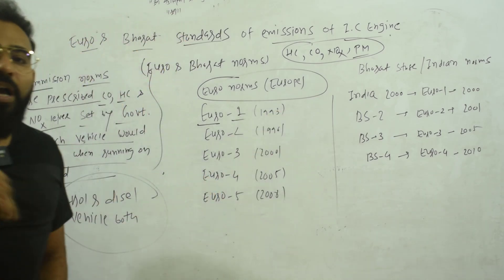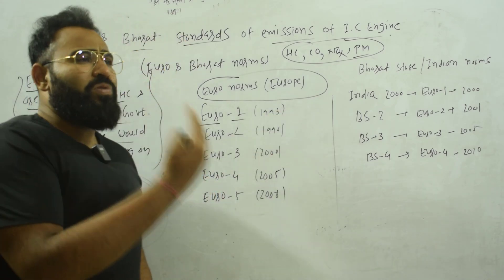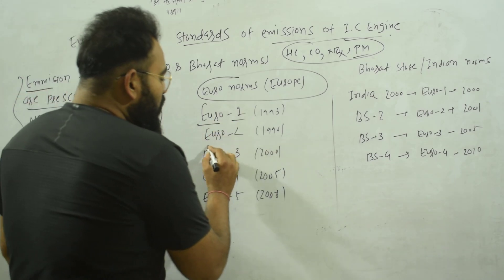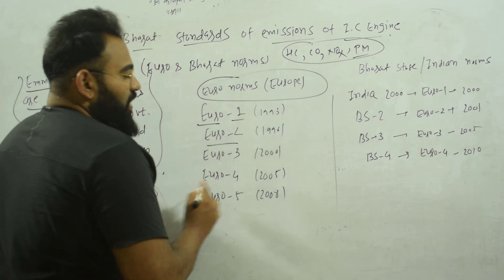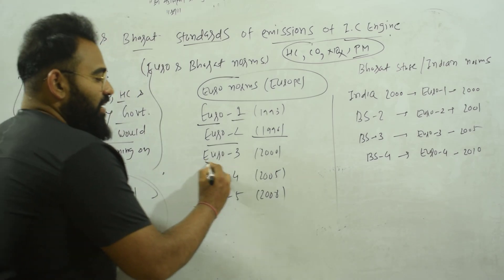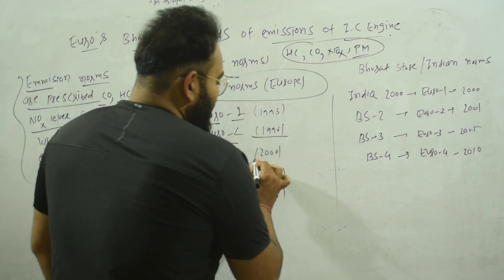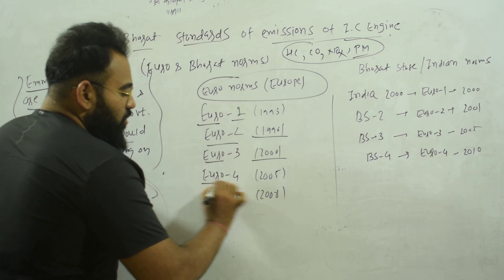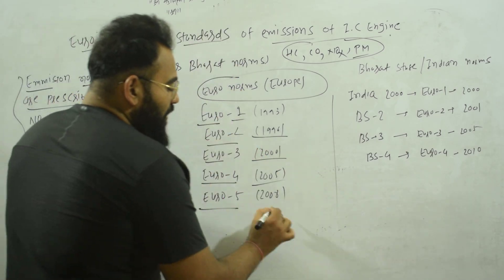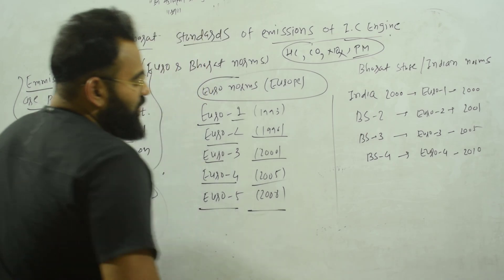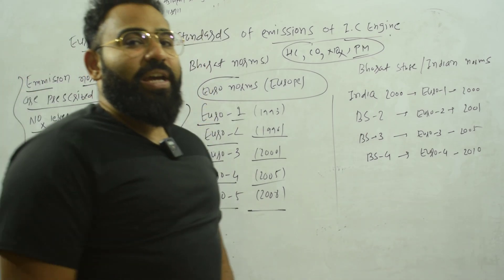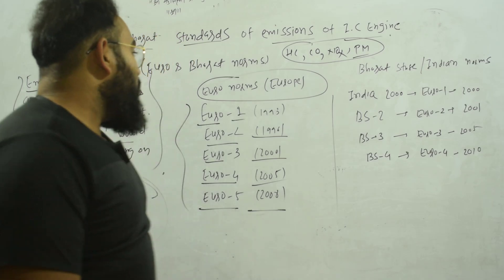Starting with Euro 1 in 1993, then the rules were updated with Euro 2, then Euro 3 was implemented, then Euro 4 was implemented in 2005, then Euro 5 was implemented in 2008 for European countries.